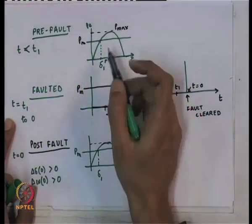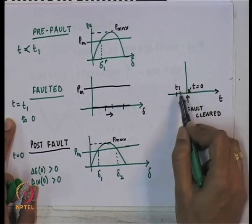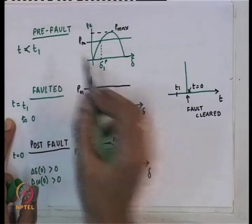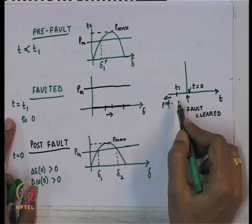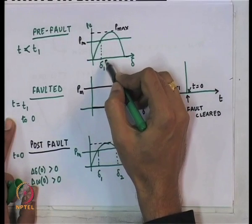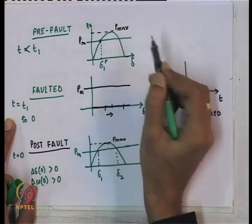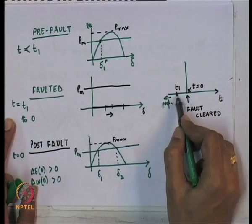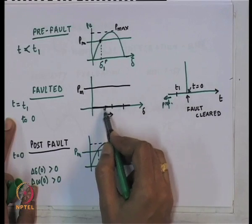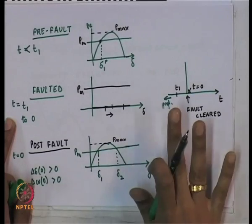Let us formulate this as a problem. Before time t_1, the system is in the pre-fault condition, operating at equilibrium delta_1 with superscript p. When a fault occurs at t_1, the electrical power becomes zero because the terminal voltage drops to zero for a three-phase fault. So the electrical power P_e becomes zero.